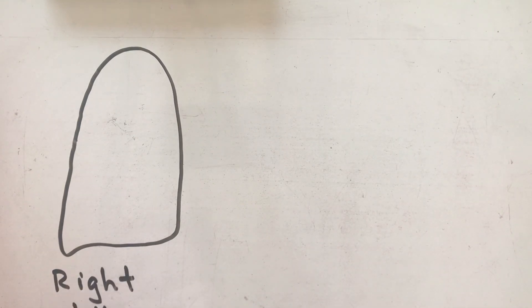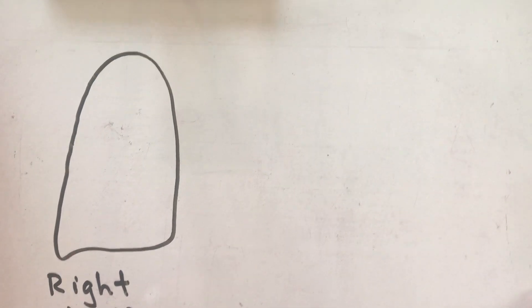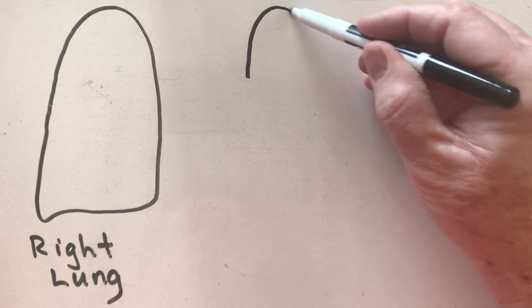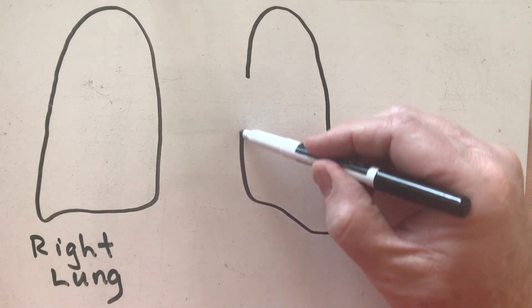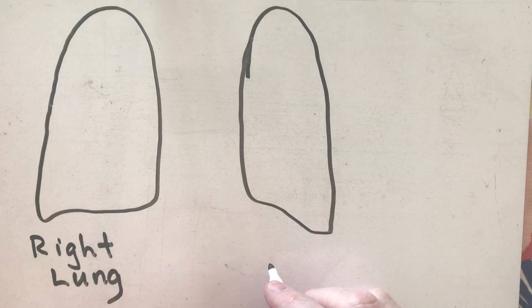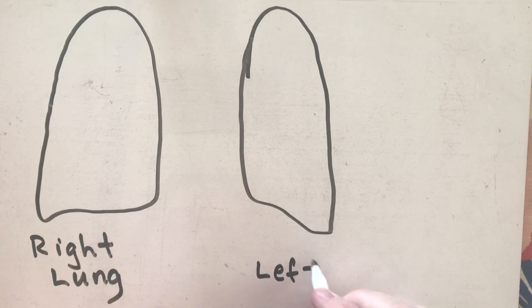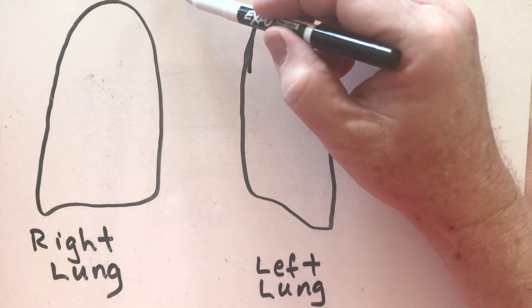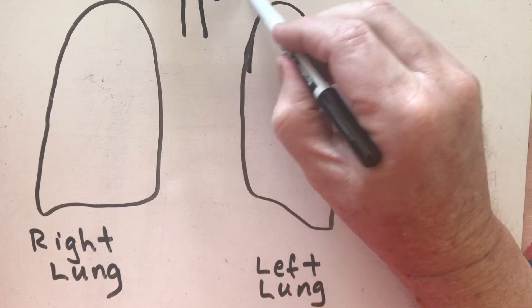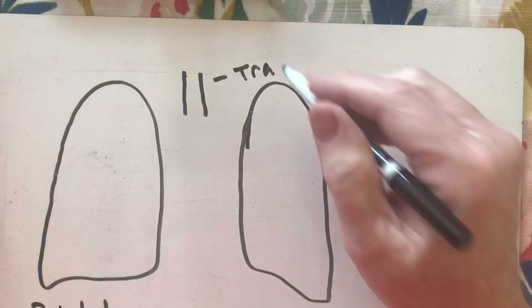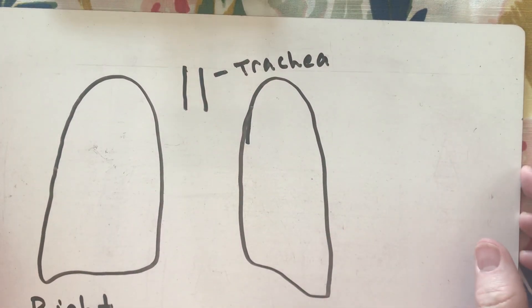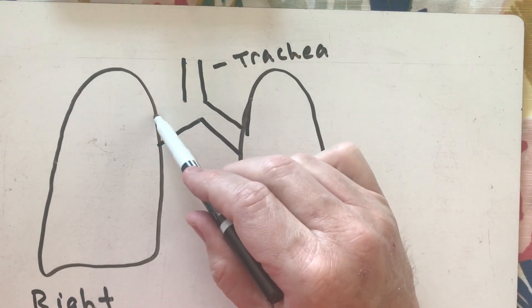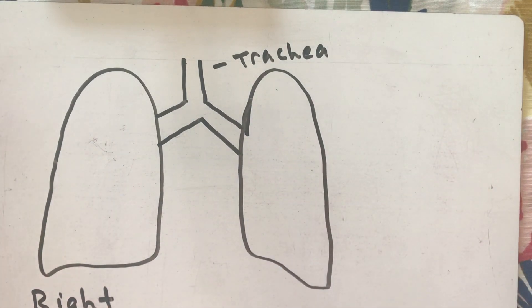Your right lung is on the right side of your body — even though it looks like I'm pointing to the left, remember it's on the right side of your body. And this over here is my left lung. Now, we had the trachea coming down, carrying air from outside the body, and then the trachea splits off into two primary bronchi right there.